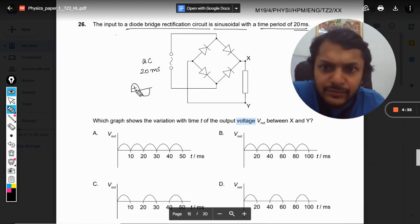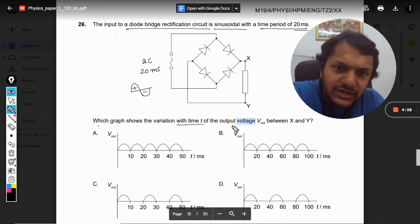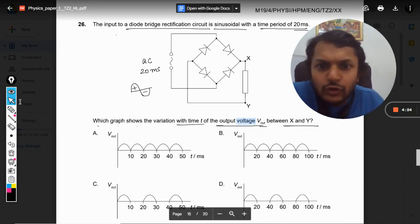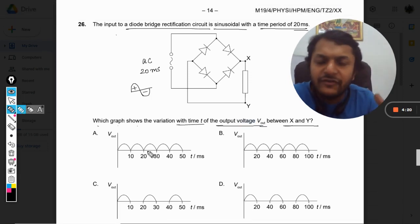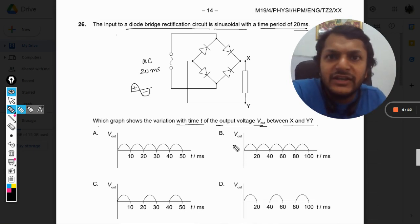Now it wants us which graph shows the variation with time t of the output voltage between X and Y. So there is an output voltage between X and Y and we want to create a graph for the voltage versus time. Let us see, first of all this kind of arrangement is used to create a full wave rectifier.